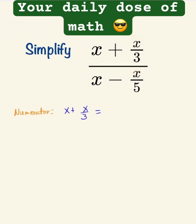We have to find the common denominator. 1 and 3, the least common denominator is 3. So 3 times x is 3x plus x over 3, which is equal to 4x over 3.